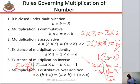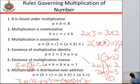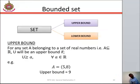Then the sixth rule is multiplication is distributive over addition. For example, you have a number 5 plus 4, all in a bracket, multiplied by 3. You can distribute 3 over 5 plus 4 so that you have 3 times 5 plus 3 times 4.